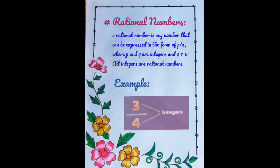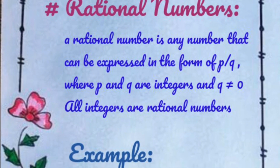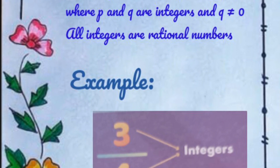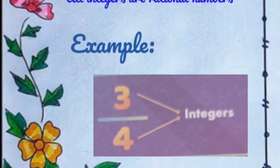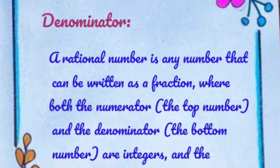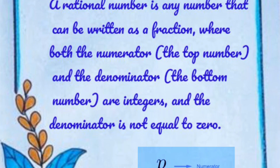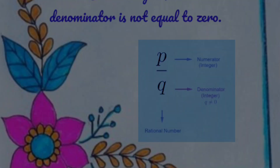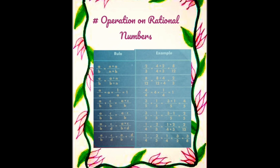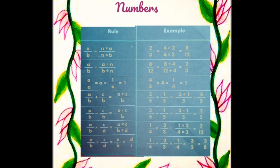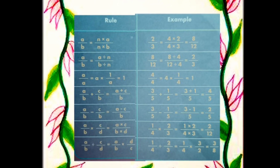The first topic is rational number — here is the meaning and example of rational number. The next page is numerator and denominator. The next and last one is operations on rational numbers — its rule with its example.